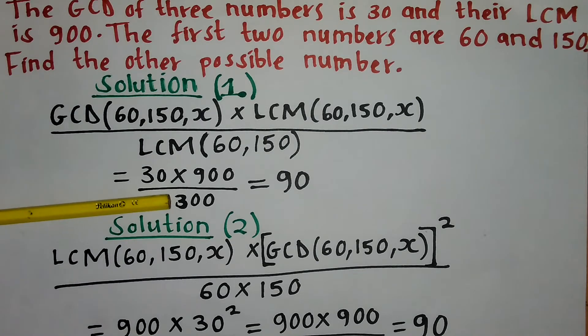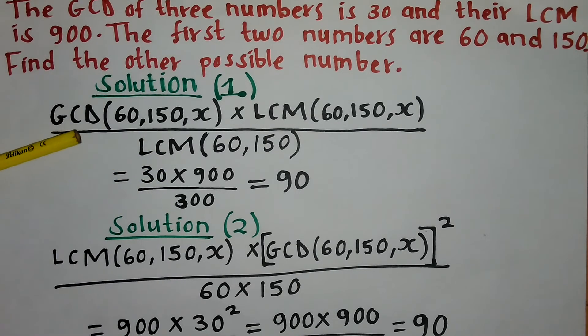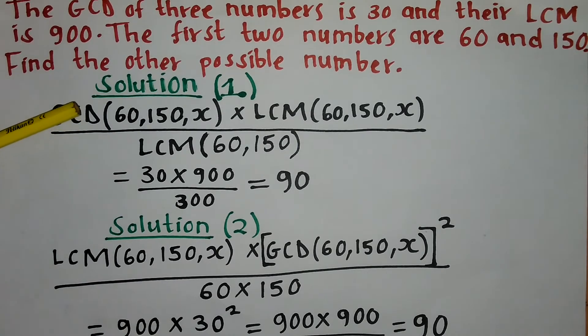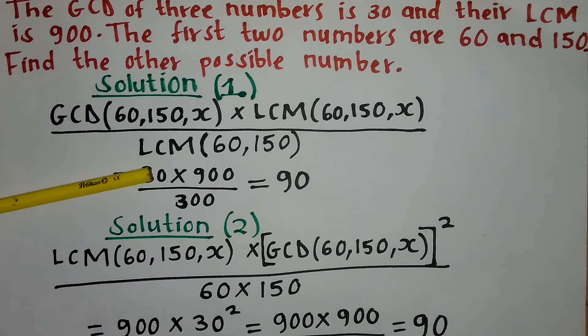I suppose you all know how to work out the LCM. So we replace that into our formula. You're going to have the GCD is 30 multiplied by the LCM, that is 900, divided by the LCM of the two given numbers. Computing this, we're going to get our answer is 90.